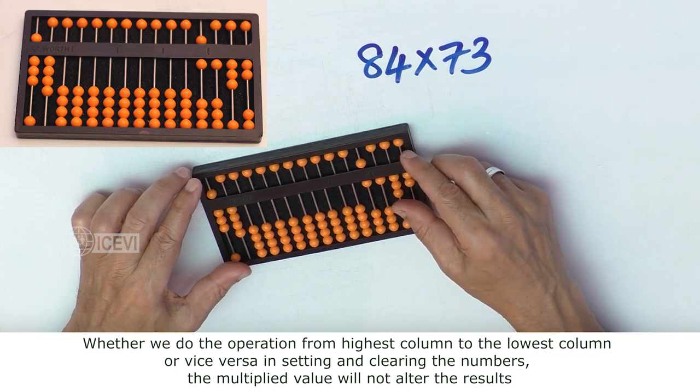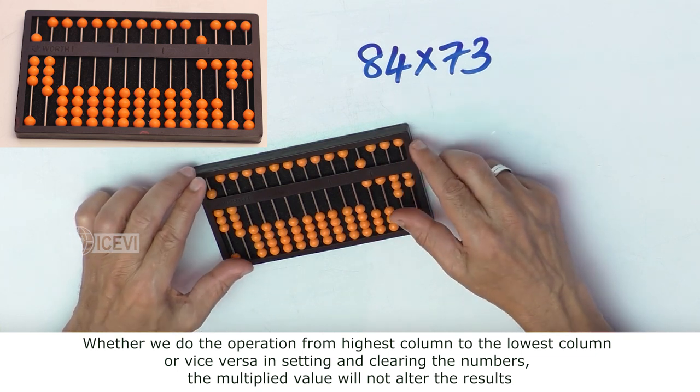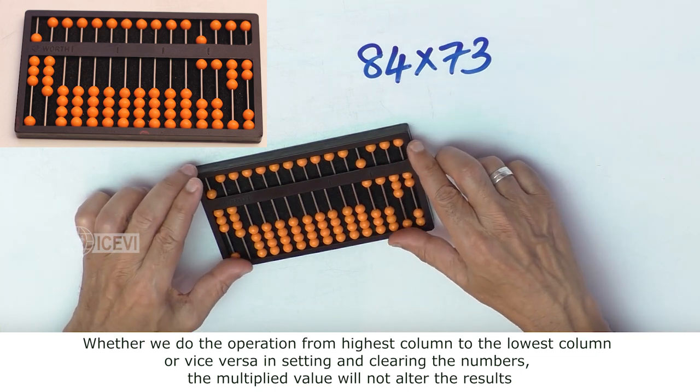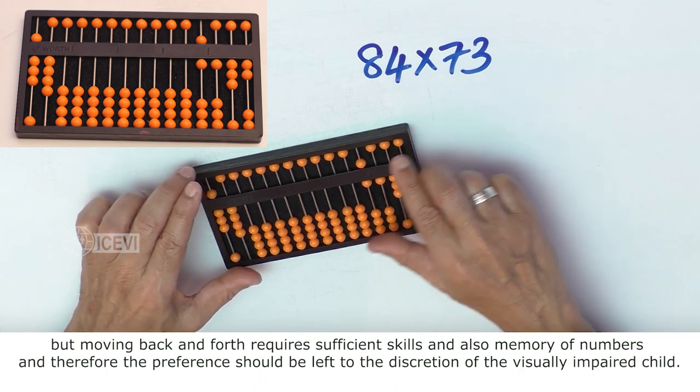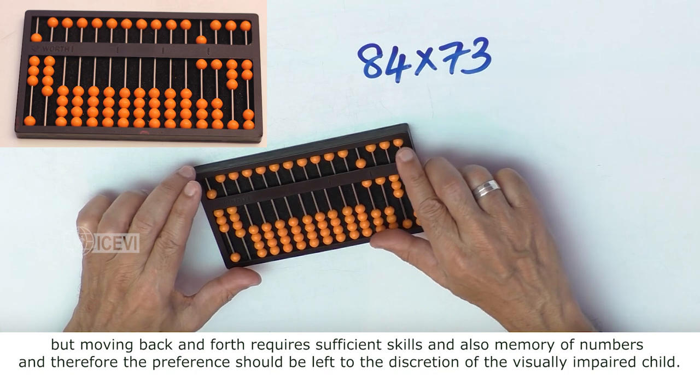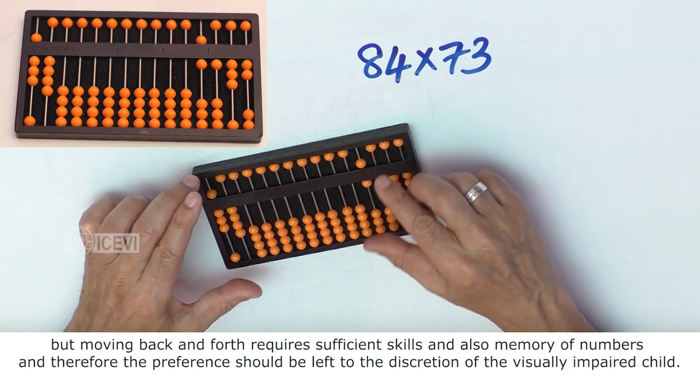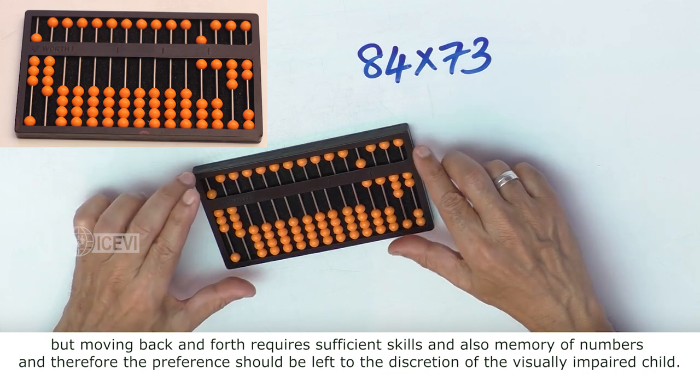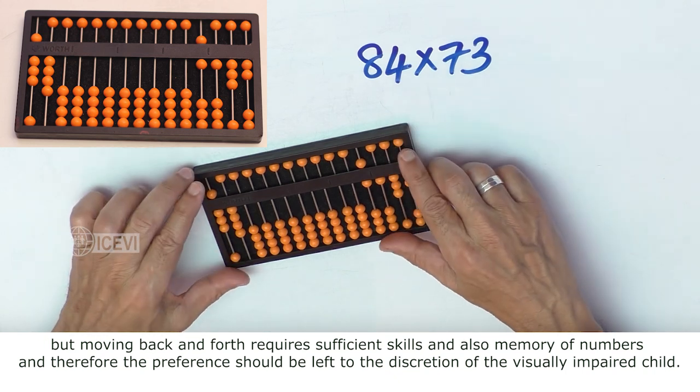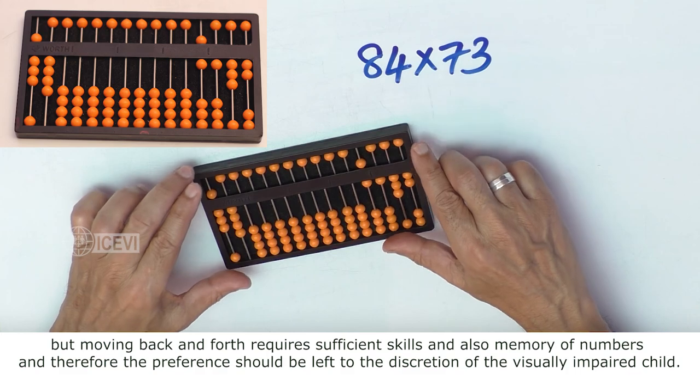Whether we do the operation from the highest column to the lowest column or vice versa in setting and clearing the numbers, the multiplied value will not alter the results. But moving back and forth requires sufficient skills and also memory of numbers. Therefore the preference should be left to the discretion of the visually impaired child.